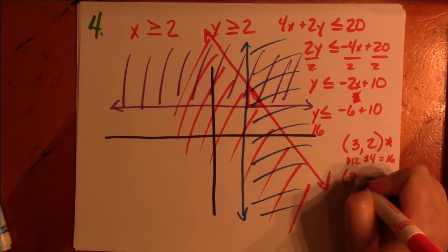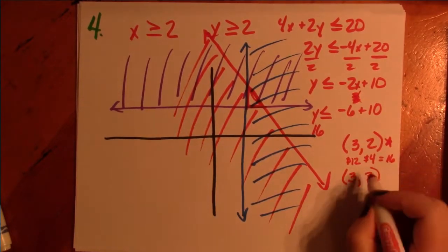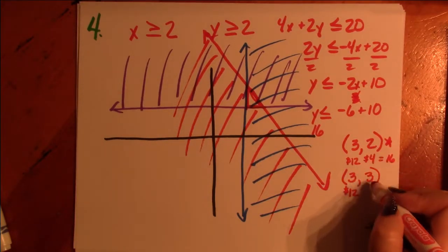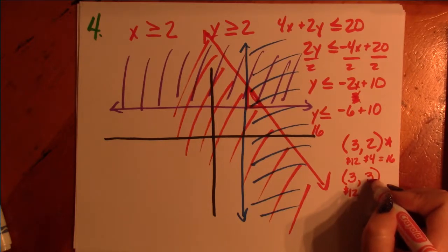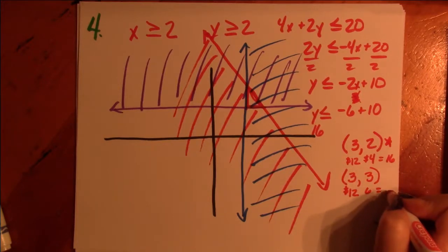If X is 3, can Y be 3? Well this is still going to be 12 and 2, pepper jack is $2, or cheddar is $2. So 3 times 2 is 6. So that's going to equal 18 and we're still under 20.